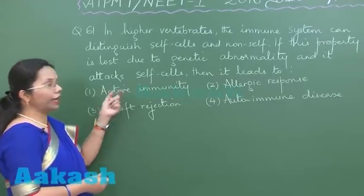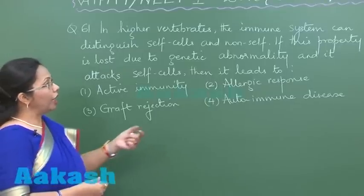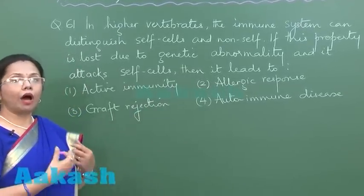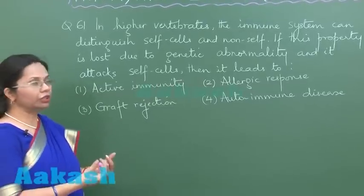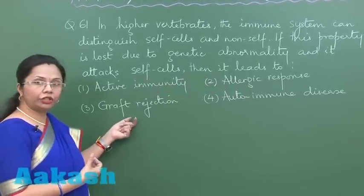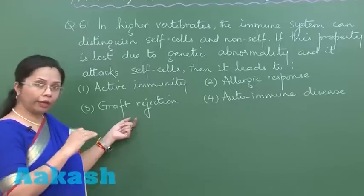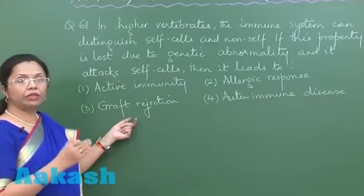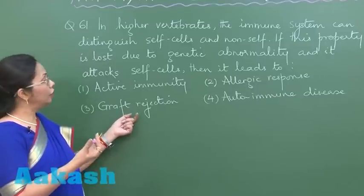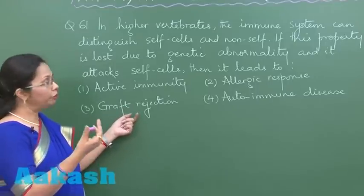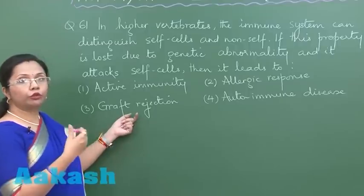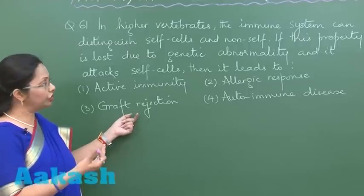There won't be active immunity. Even allergic response is also against some harmless substances which are entering the body. Graft rejection is also due to the ability of the body to distinguish between self and non-self, and if the graft is from a different individual, the body is able to recognize it and starts rejecting it.